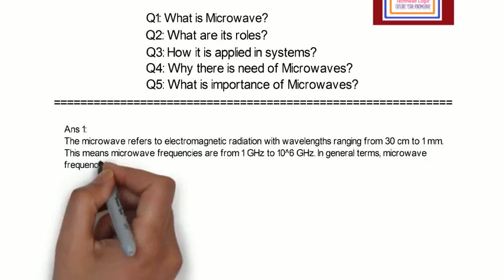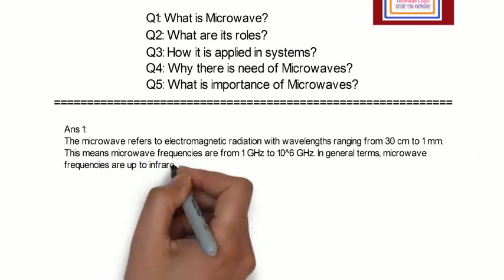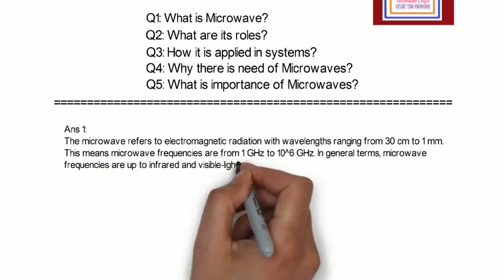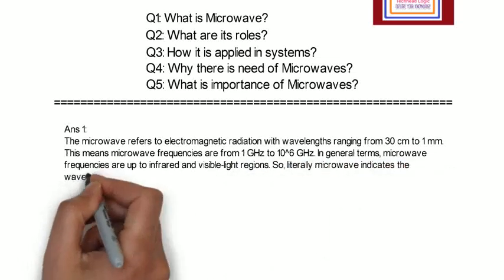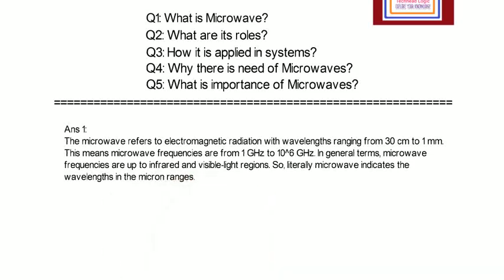In general terms, Microwave frequencies are up to infrared and visible light regions. So literally Microwave indicates the wavelengths in the micron ranges.